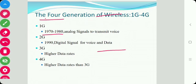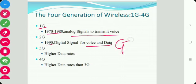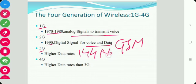The last topic is the 4 generations of wireless, 1G to 4G. The first generation, 1G, was present in the 1970s and 1980s and uses analog signals to transmit voice only. The second generation, 2G, started in 1990 and uses digital signals for both voice and data — GSM and TDMA are examples of 2G. Generation 2.5 represents technology improvements between 2G and 3G. The third generation, 3G, supports higher data rates from 144 Kbps to 2 Mbps and beyond.